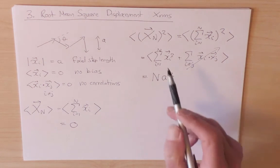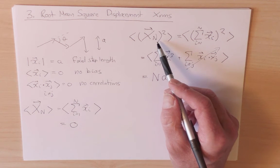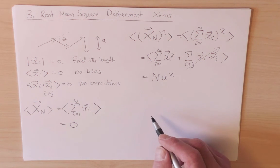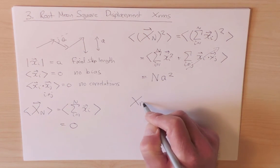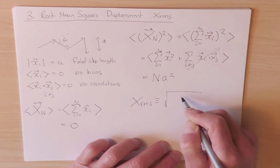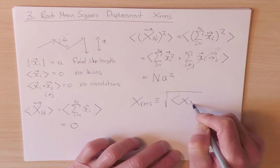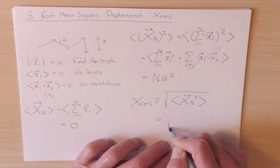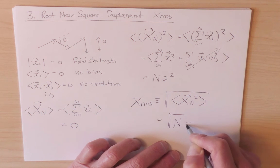So this quantity, X_n squared, is known as the mean square displacement. And the square root of the mean square displacement is precisely the root mean square displacement, X_n squared, average value, this is equal to the square root of n a.